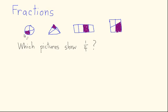I've drawn four pictures here: a picture of a circle, a picture of a triangle, a picture of a rectangle, and another picture of a rectangle. In each case, I've divided the shape up into four pieces and shaded one of those pieces in. The question for you is: which of these pictures show one fourth?